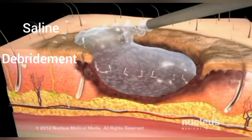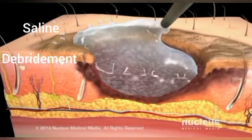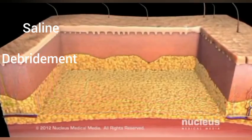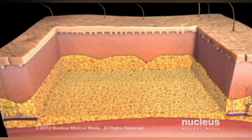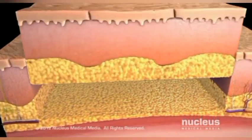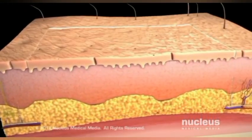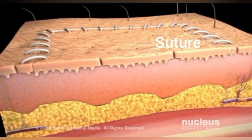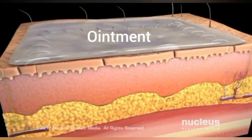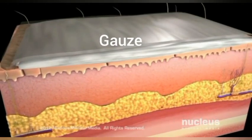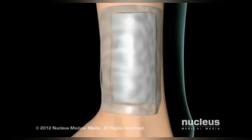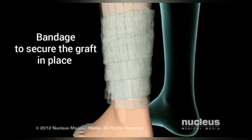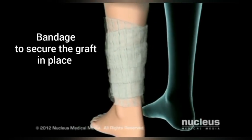The damaged area is cleaned with saline and dead tissue is removed — this is known as debridement. Then the graft is placed and stitched. Ointment is applied and the graft is covered with a gauze. Finally, a bandage is used to secure the graft in place.